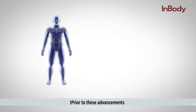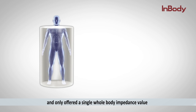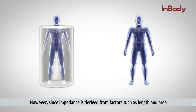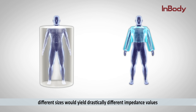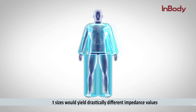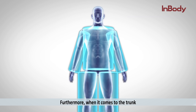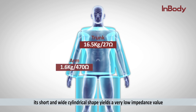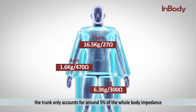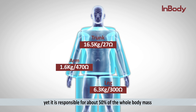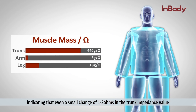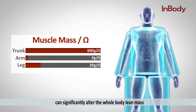Prior to these advancements, the conventional BIA method considered the human body as one cylinder and only offered a single whole-body impedance value. However, since impedance is derived from factors such as length and area, different sizes yield drastically different impedance values. At a closer look, our body is not one but five cylinders with different lengths and widths, and therefore measurements should be segmentally analyzed. Furthermore, the trunk's short and wide cylindrical shape yields a very low impedance value — the trunk only accounts for around five percent of the whole body impedance, yet it is responsible for about 50 percent of the whole body mass. This indicates that even a small change of one to two ohms in the trunk impedance value can significantly alter the whole body lean mass.